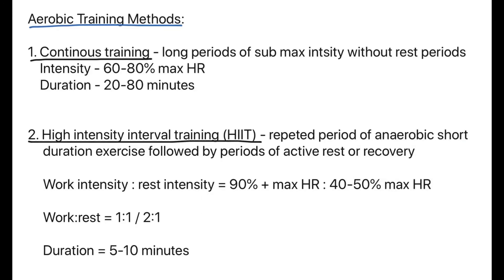Now we need to understand different types of aerobic training methods. The first is continuous training, which is long periods of sub-maximal intensity exercise without periods of rest. You perform at 60% of your maximal heart rate, and the duration is usually between 20 and 80 minutes. High-intensity interval training, or HIIT, on the other hand, is repeated periods of anaerobic short-duration exercise followed by periods of active rest to recover. The work intensity is about 90% of maximal heart rate, and rest is 40-50% of maximum heart rate. The work-to-rest ratio is 1:1 or 2:1, and the duration is 5-10 minutes.